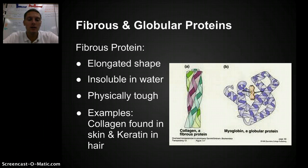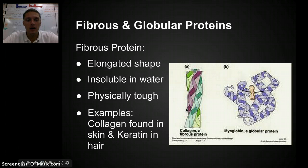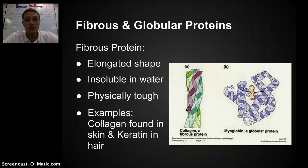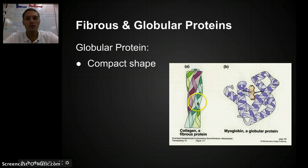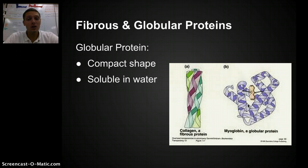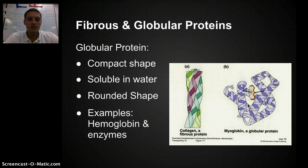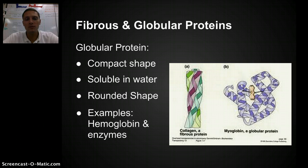The first type of protein we'll look at is called a fibrous protein. These have an elongated shape, are insoluble in water, and are physically tough. Examples include what we'd find in connective tissue or bone tissue — very structured and rigid, providing structure and support. The second type is called a globular protein, which has a more compact shape. You can see in the picture: fibrous is like a rod or filament, whereas globular is a rounded compact shape. Globular proteins are soluble in water. Fibrous proteins are usually only found in the primary or secondary structure, whereas globular proteins can be found in all four structural arrangements.